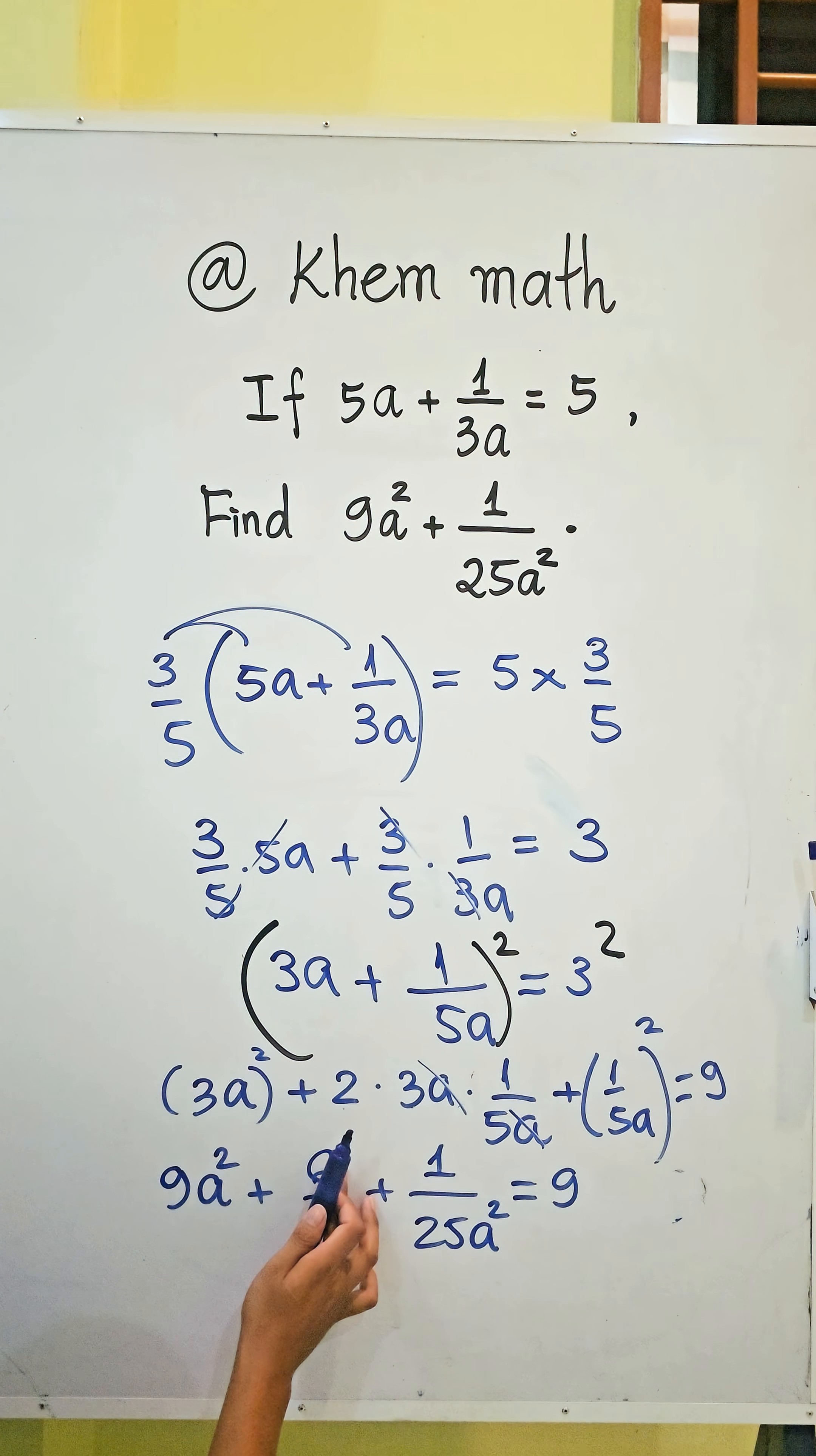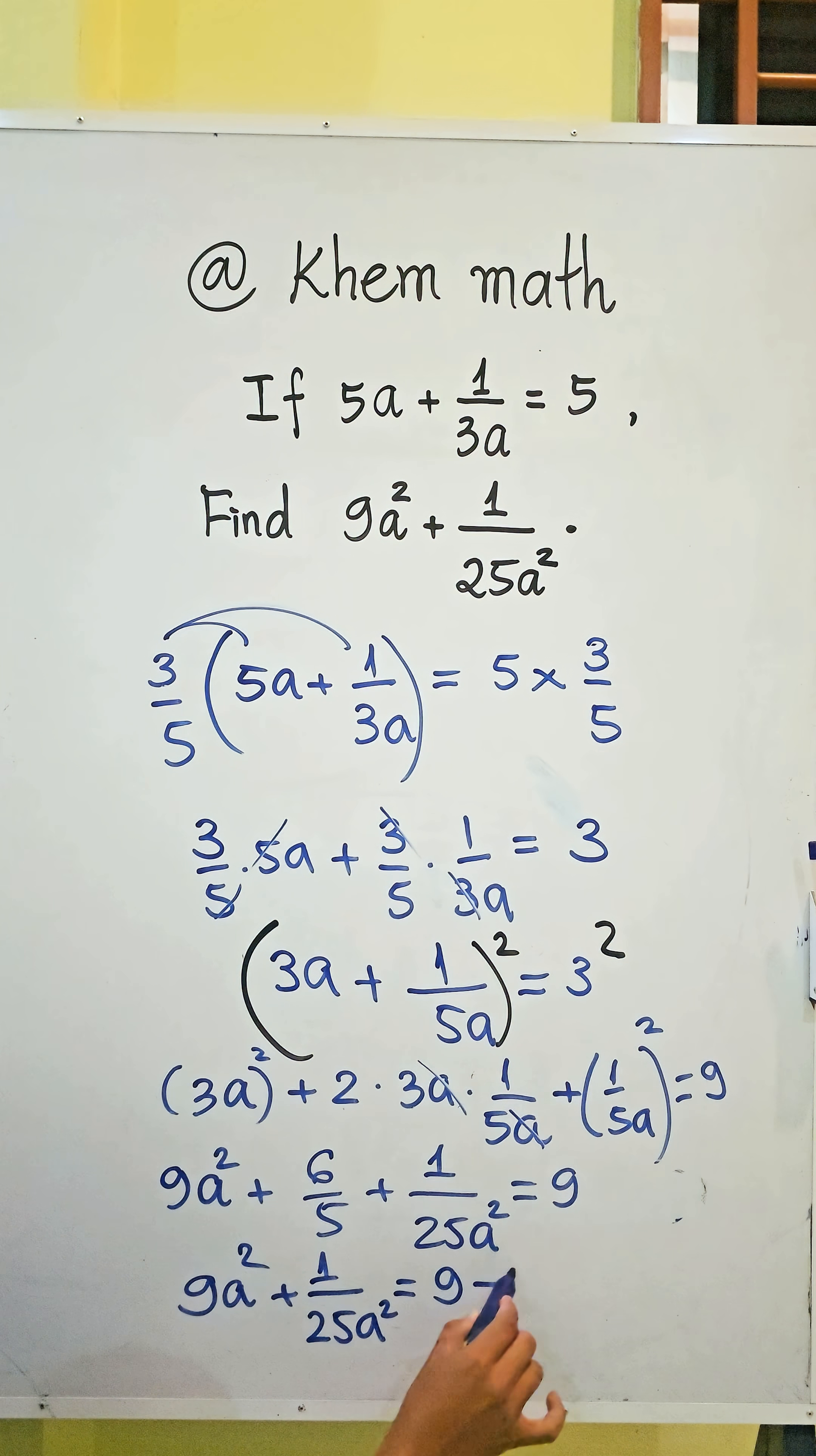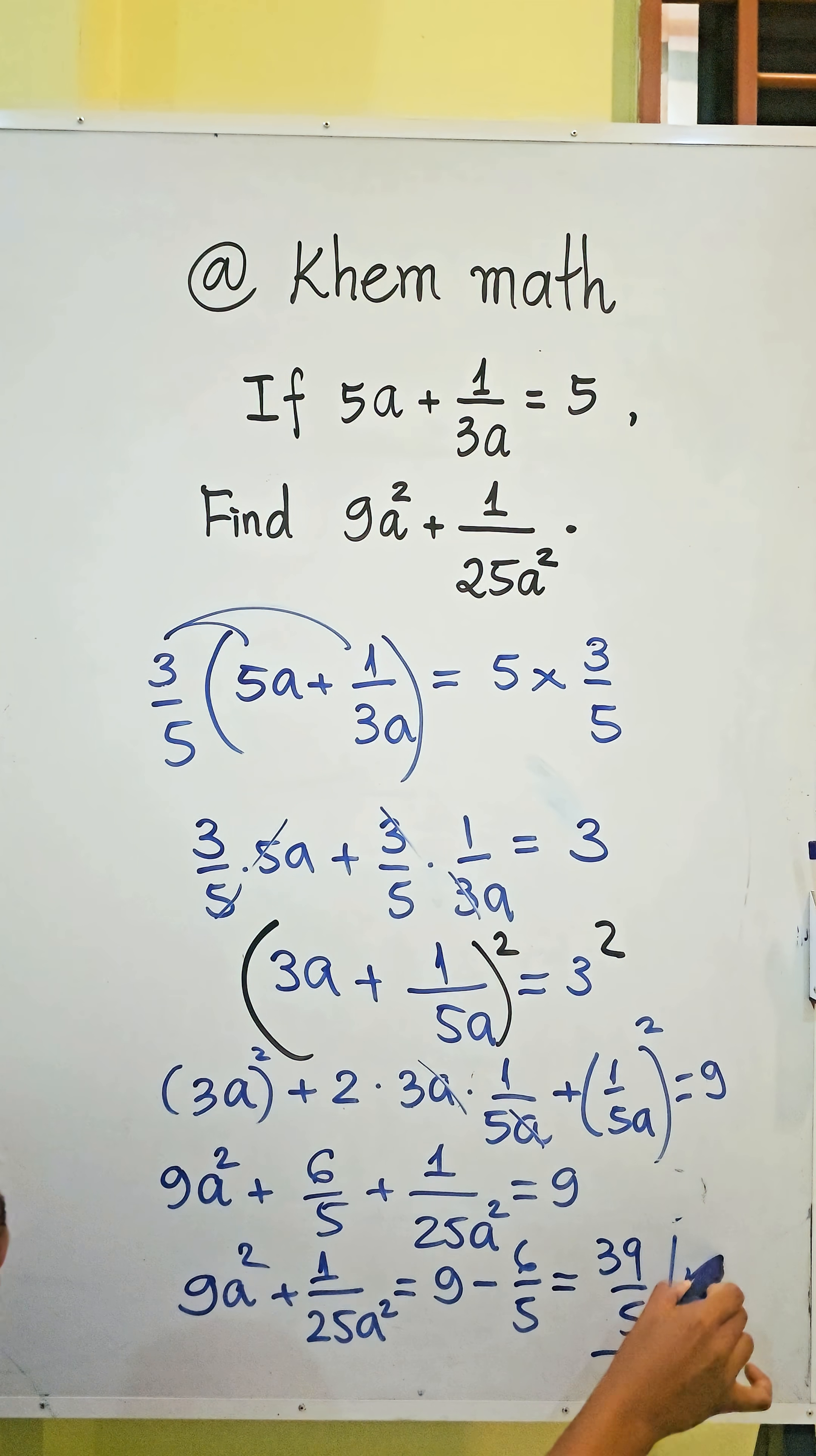And we change 6 divided by 5 to the right hand side. We get 9a squared plus 1 divided by 25a squared equals 9 minus 6 divided by 5. We get 45 minus 6 equals 39 divided by 5, which is our answer.